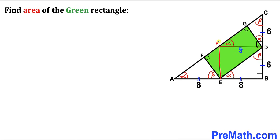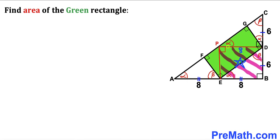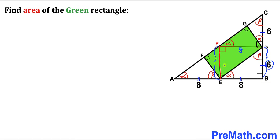In this next step, I have connected point P with point E. As a result, we can see that we got rectangle EBDP and this angle is 90 degrees. Now since we are dealing with this rectangle, if this side length is 6 units, then this side length PE is going to be 6 units as well.